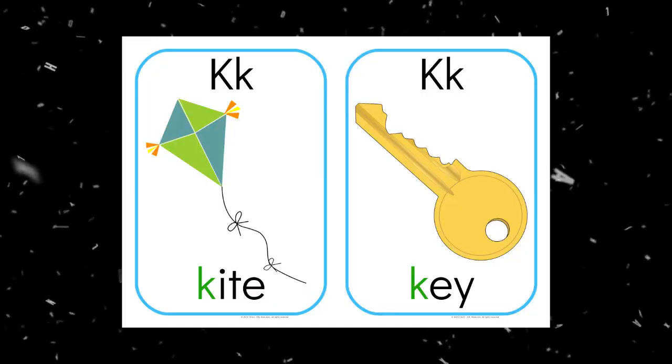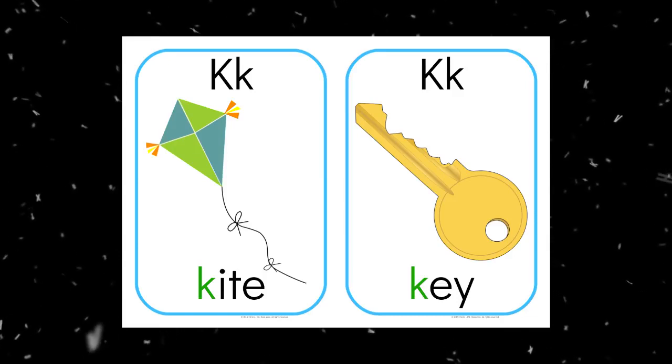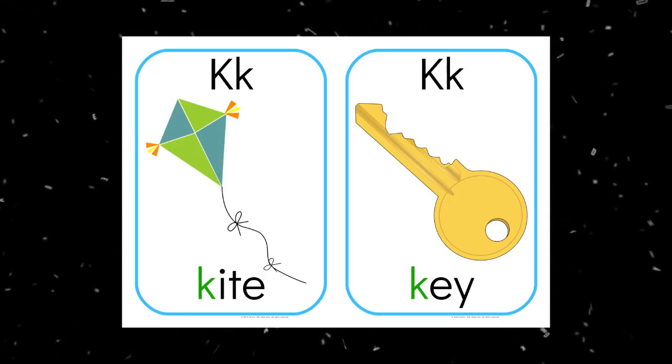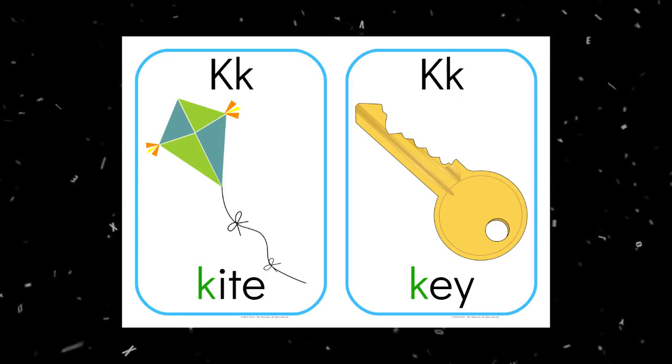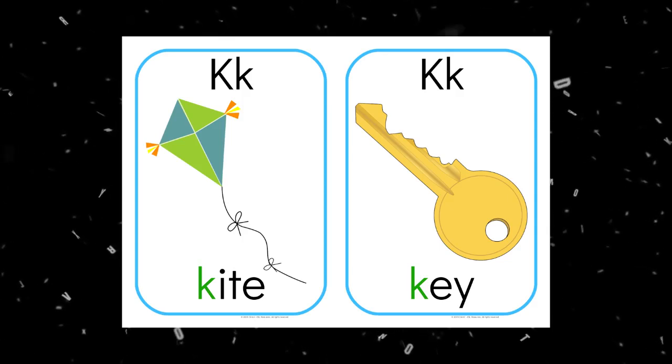And then you have letters like k. If anyone can tell me better words I can use, I will gladly update my flashcards, but I used kite and key because I could not think of any appropriate k words that used a short vowel sound. I could, but I didn't want to use them.